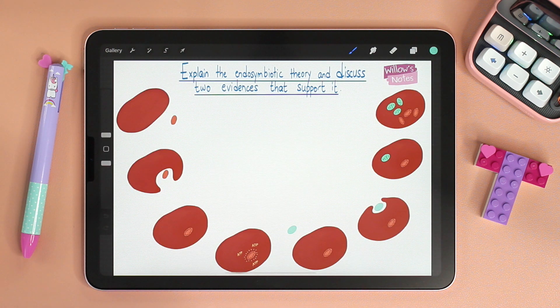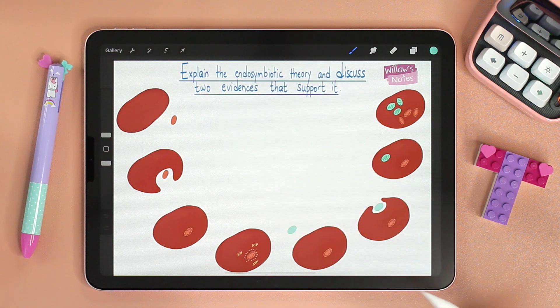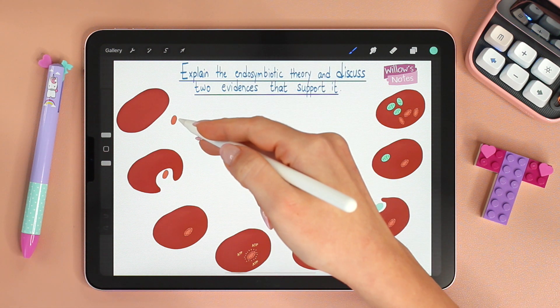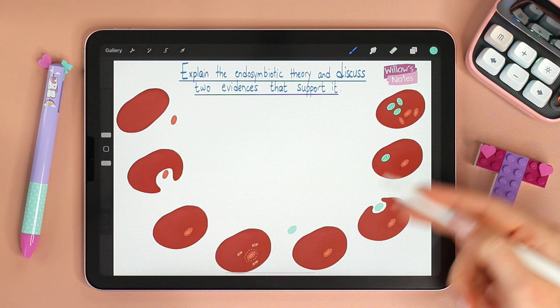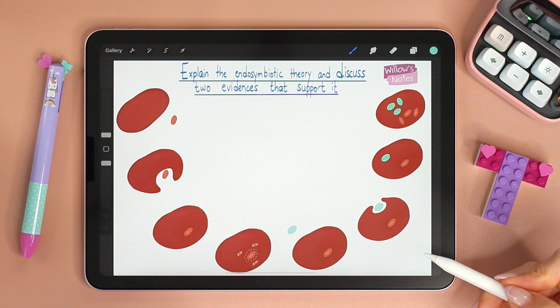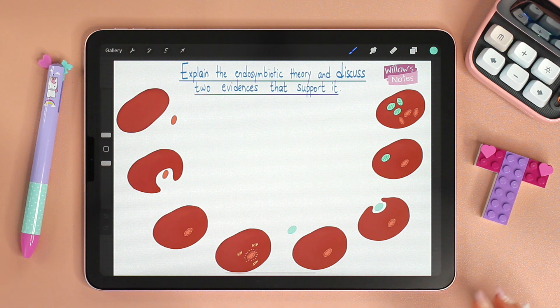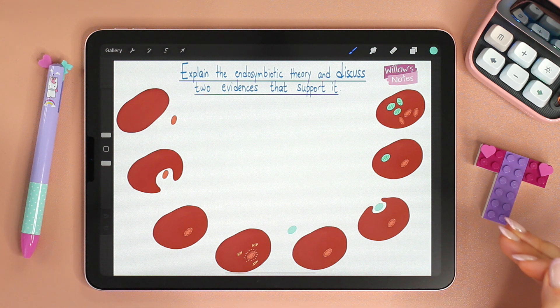Let's go back to the question. To explain the theory, we will say in short: a prokaryotic cell was engulfed by another cell and they formed a symbiotic relationship. How did scientists even come up with such a theory? What are the evidences to support it?